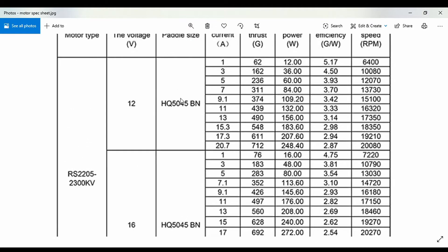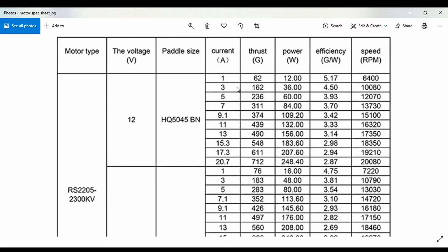This is the recommended propeller size, 5045. Let's look at the other columns. First is the current draw. When you start the motor, the minimum current it will draw is 1 amp, and as you speed it up, the current draw increases. At max, it will take 20.7 amps. Note this is for one single motor.